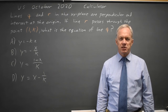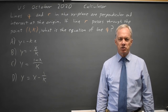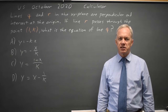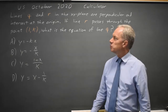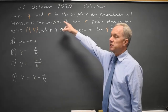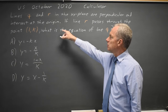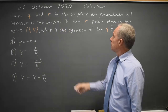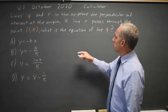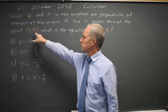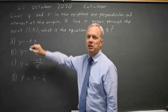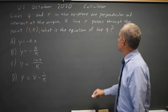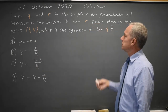I'm Dr. Roger and this question is from the 2020 October U.S. exam calculator section. College Board tells us that lines Q and R are perpendicular. Both pass through the origin and line R passes through the point (1, K). They're asking for the equation of line Q.